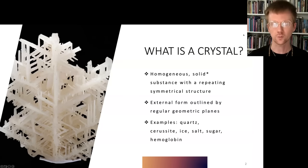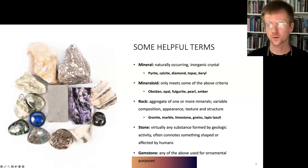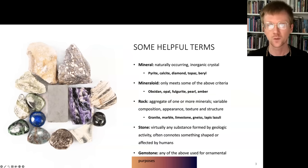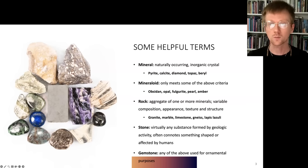When we talk about crystals, we're talking about this kind of inner order — inner coherence at the most foundational level of their makeup. A mineral is a naturally occurring inorganic crystal, so it still maintains that structural order and symmetry and homogeneous composition, but it also has to be made by non-living forces. Examples include pyrite, calcite, diamond, topaz, and beryl. We have approximately 6,000 named mineral species cataloged so far.